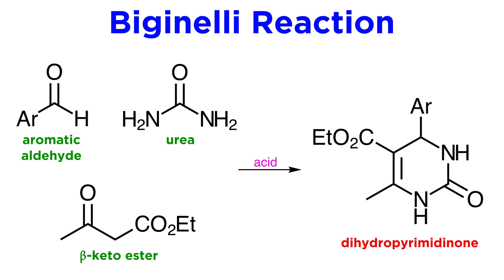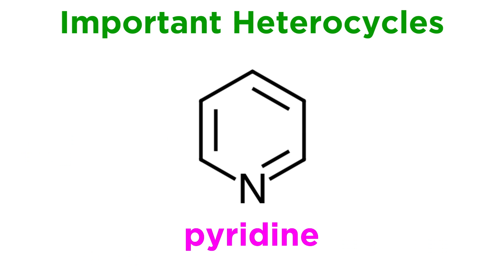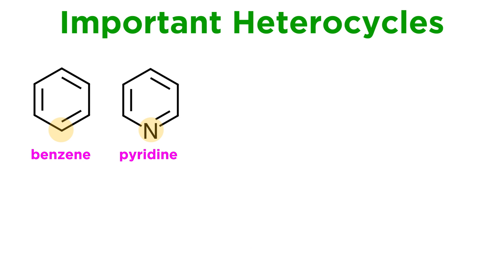Since we have not yet discussed this particular heterocyclic system, let us take a step back and introduce it. We have previously discussed the properties and synthesis of pyridines, which are important compounds in nature and in drug design. To formally obtain the pyridine ring, you simply replace a carbon atom of benzene — or more precisely a methane — with a nitrogen atom. Pyridine is the trivial name given by chemists to this system.